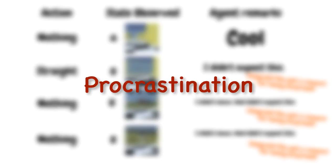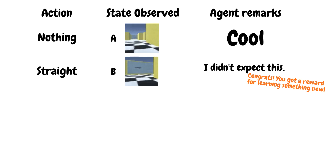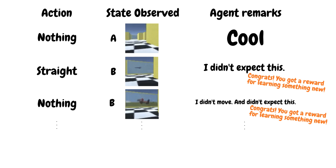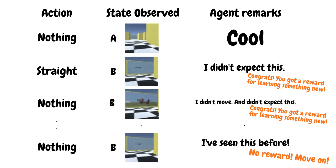This is similar to procrastination in human beings. The episodic memory-based curiosity we discussed before, however, can avoid this. Consider the agent is in front of the TV — every time the channel flips, the agent observes a new state and stores it in memory. However, since the number of channels is finite, once all channels have been flipped, the agent is no longer rewarded for seeing the same channels, and it will move forward, looking at parts that were unexplored.